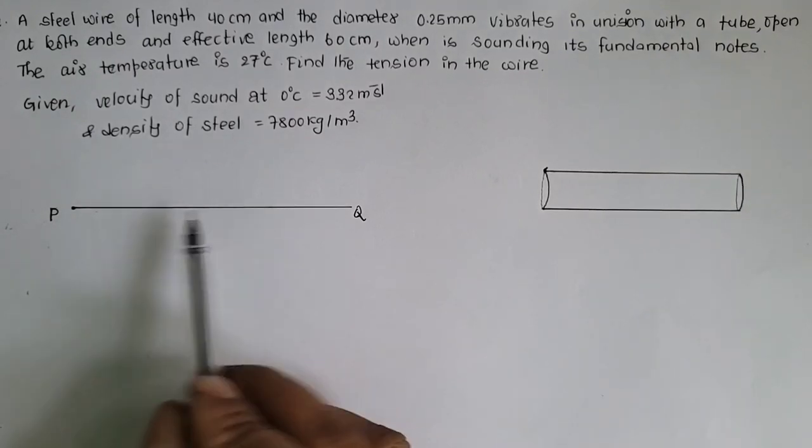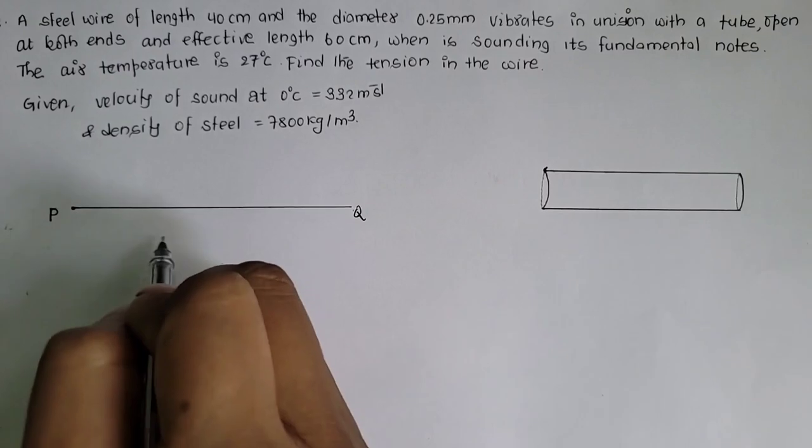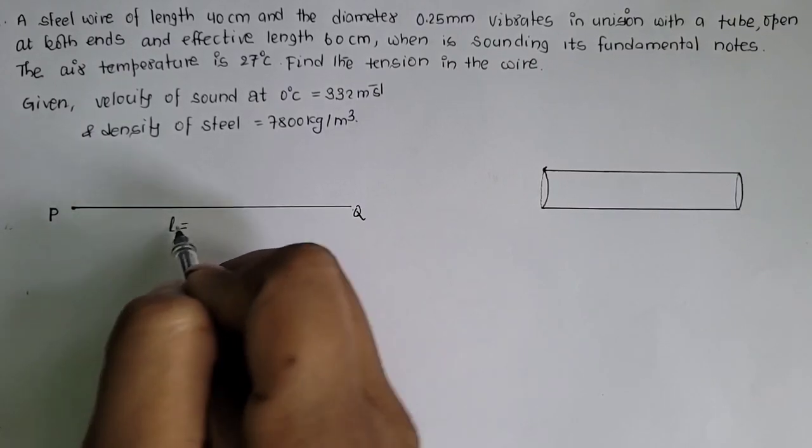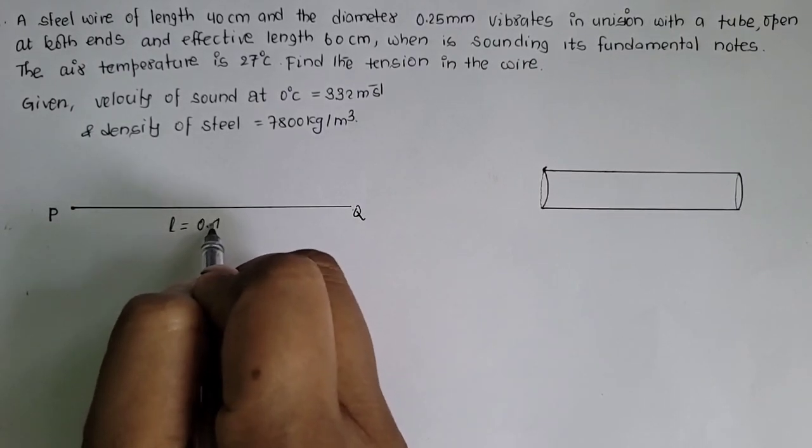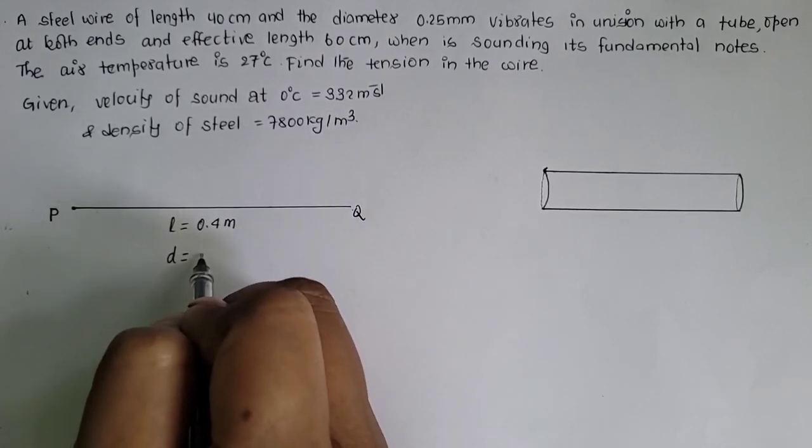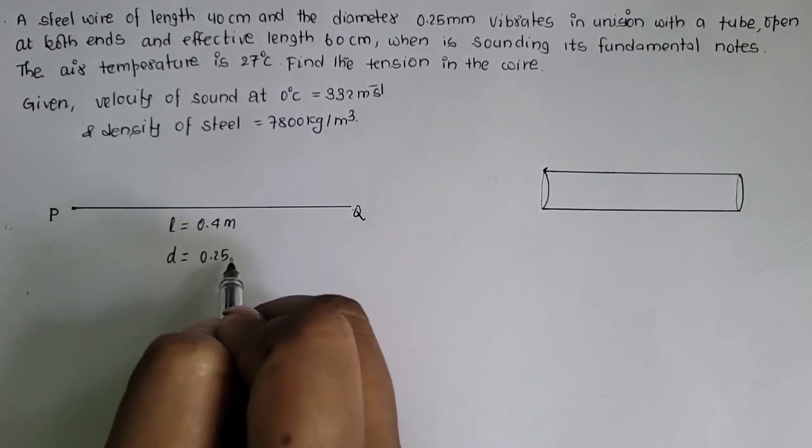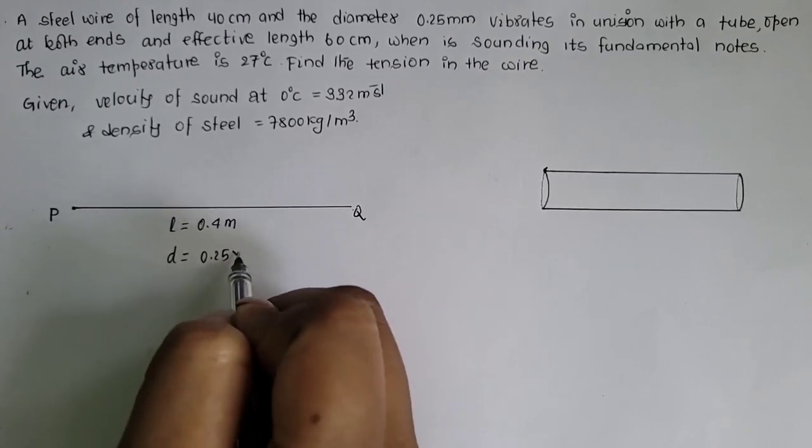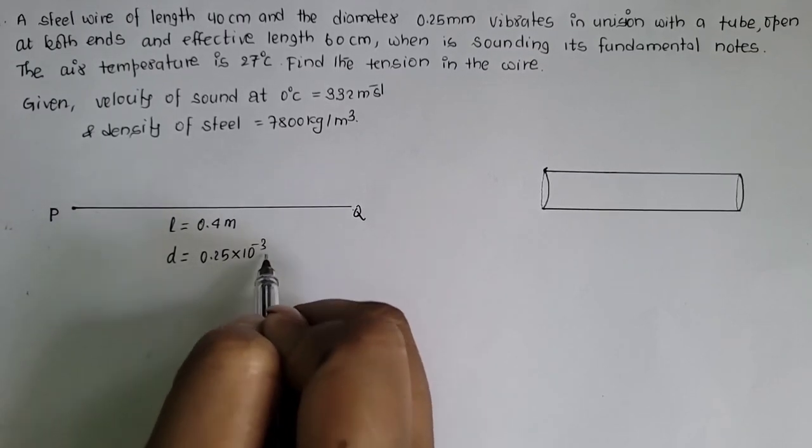A steel wire of length 40 cm which is equal to 0.4 meter and diameter, diameter of the wire degosa, 0.25 mm which is equal to 0.25 into 10 to the power minus 3 meter.